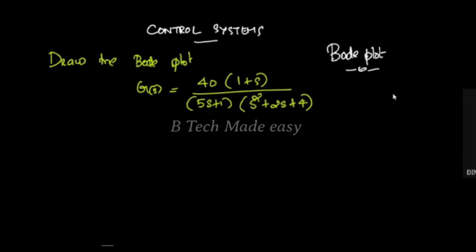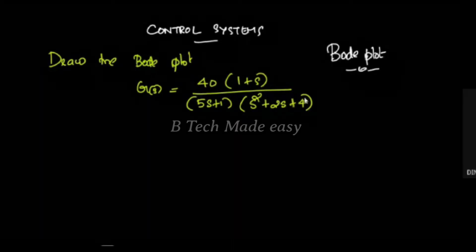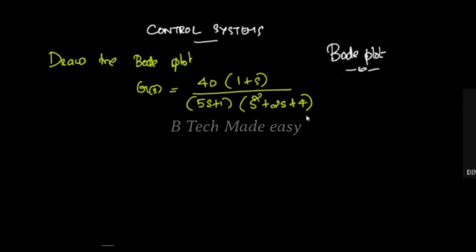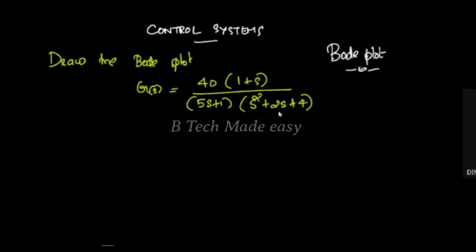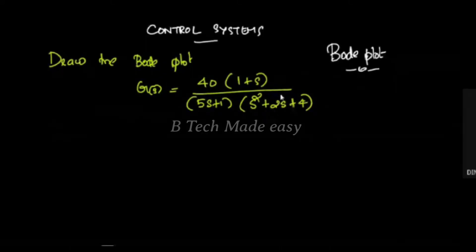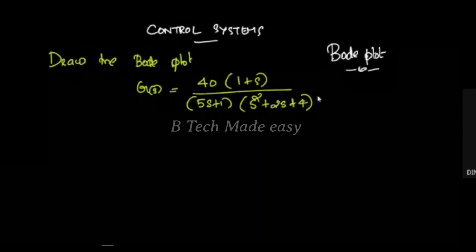The standard second order system form is s² + 2θωₙs + ωₙ². In the RLC network, we find the transfer function and identify the second order system.